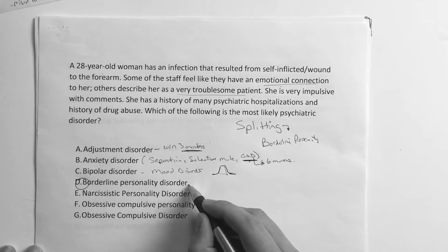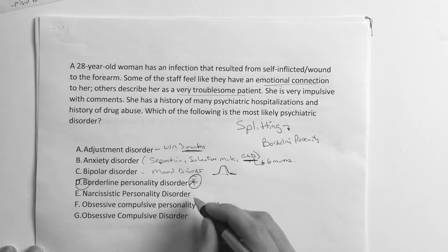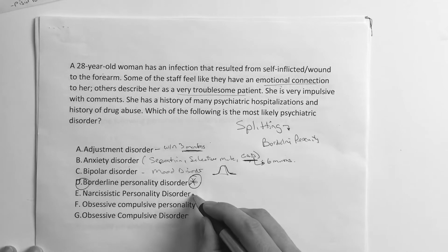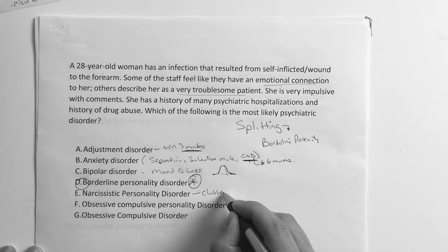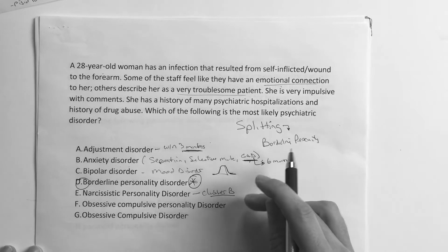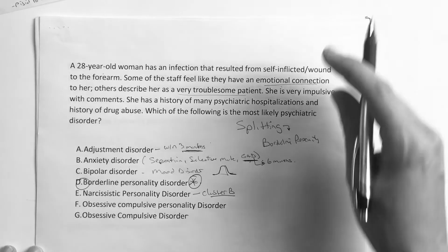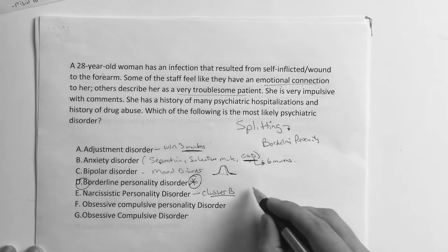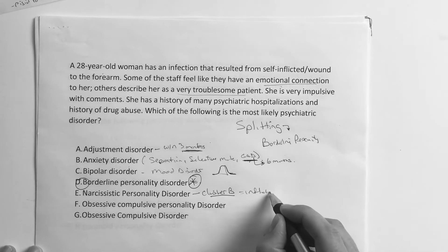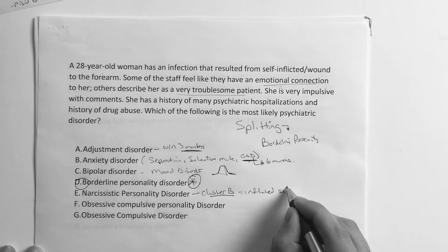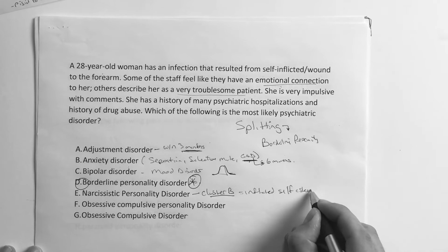Narcissistic personality disorder is a very key one they always ask about on exams. It's in the same category as borderline — cluster B — and you've got to know these categories. That one is basically about inflated self-esteem.